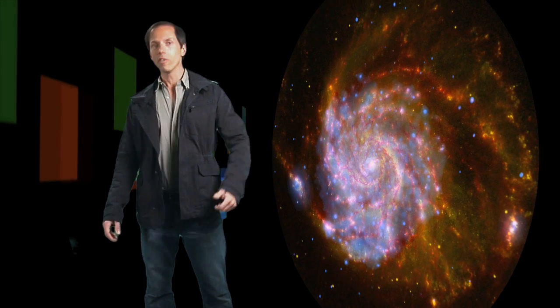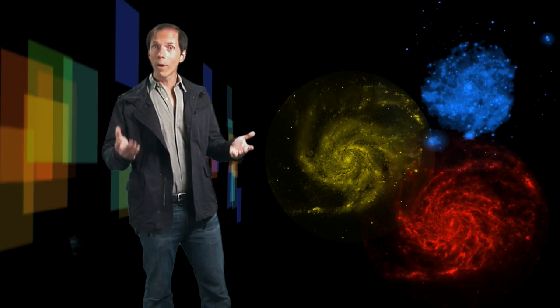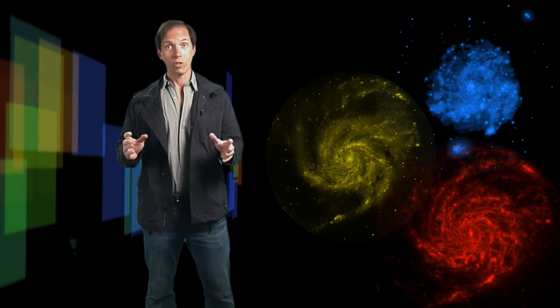This new image goes even further, combining each of the previous observations into a single view. Blue features represent X-rays, while the red colors are infrared. Visible light is yellow, which itself is a combination of red and green.